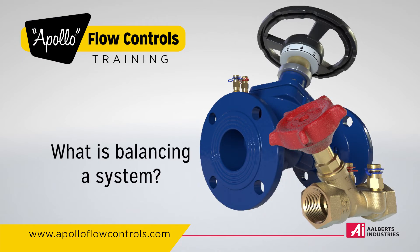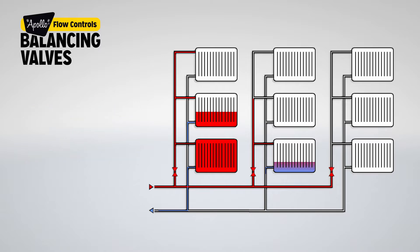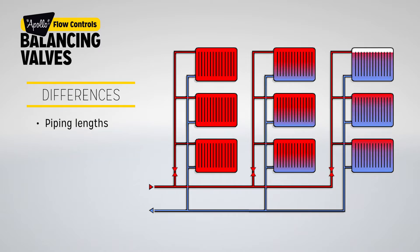What is balancing a system? When a system is not balanced, the flow rate will be inconsistent throughout. Differences can occur due to different piping lengths, the layout of the system, or different needs of each terminal in the system. Without balancing valves, this will result in hot and cold areas in the system.